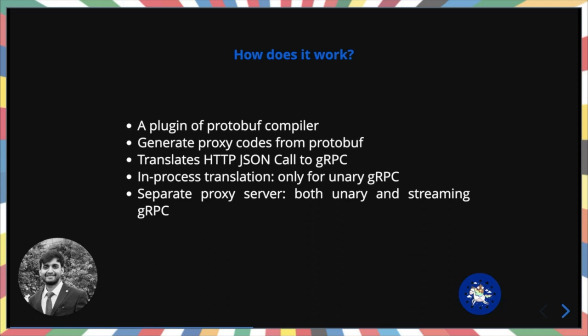However, in-process translation only works for unary calls. To do streaming gRPC, we must run the HTTP gateway as a separate proxy server. In that case, the HTTP/JSON request is forwarded to the gRPC server via a network call.